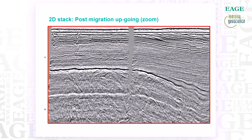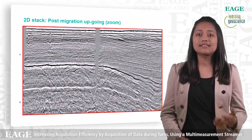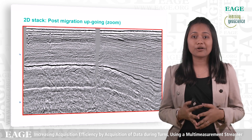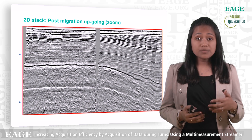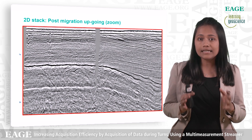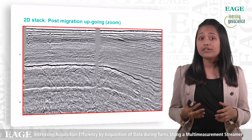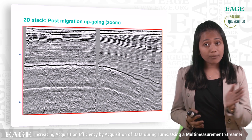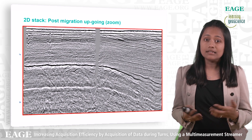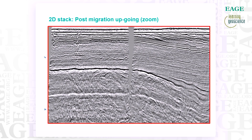We now look at an initial 2D migration of the data. This is deliberately not the most elegant and cleanest migrated section, as for the post-migration data we have not applied any additional noise filtering before or after migration. We wanted to assess the data in its rawest form after migration to ensure that we were not hiding any potential ill effects of the turned data. What we see is a large number of migration swings; however these extend from left to right across the section, whether the data is from the straight or turned part of the acquisition.